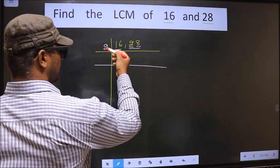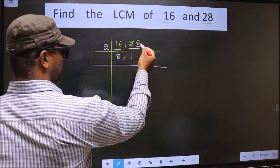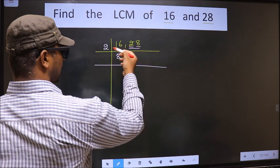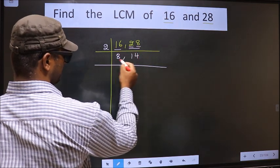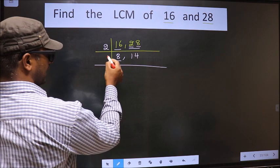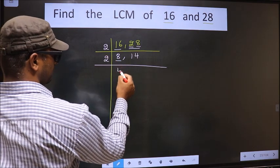When do we get 2 in the 2 table? 2 times 1 is 2. The other number is 8. When do we get 8 in the 2 table? 2 times 4 is 8. Now here we have 8 — 2 times 4 is 8.